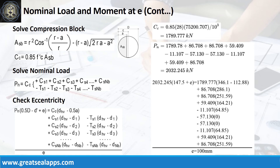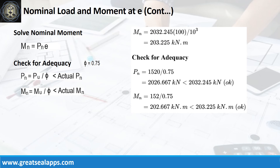By summing up all the forces, the nominal axial load is 2032.245 kN. Follow the given computations for final check of eccentricity at 100 mm. Given nominal axial load equals 2032.245 kN and eccentricity equals 100 mm, the nominal moment is 203.225 kNm. The nominal design load of 2026.667 kN is less than the 2032.245 kN actual load capacity, and the nominal design moment of 202.667 kNm is less than the 203.225 kNm actual moment capacity — the design is adequate.